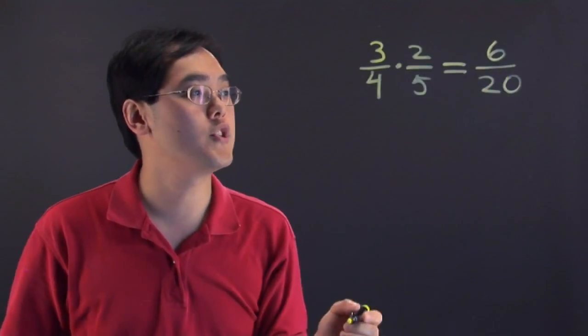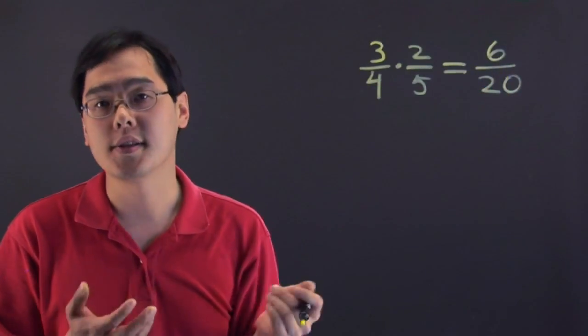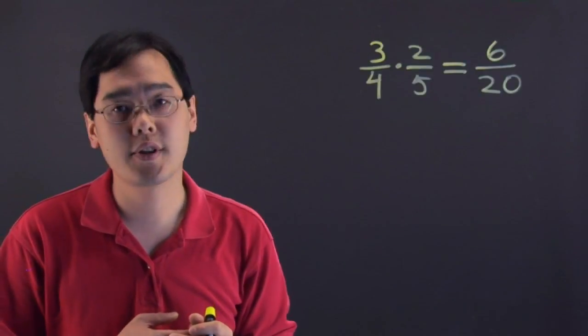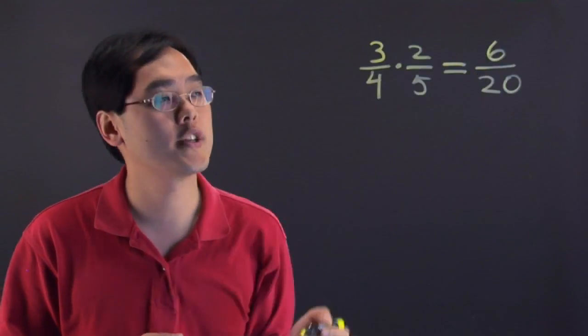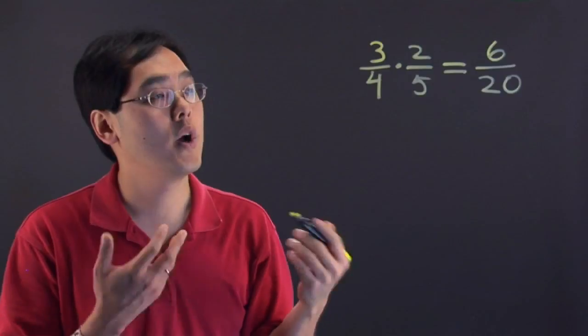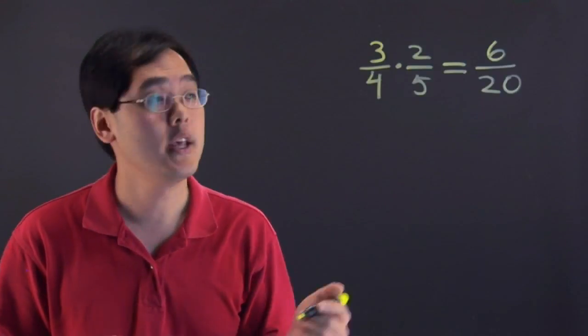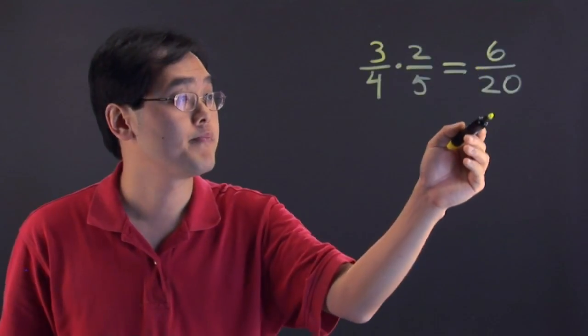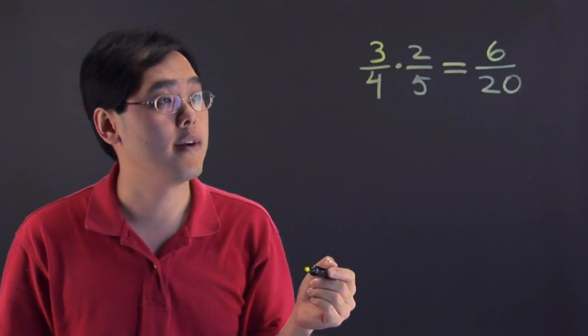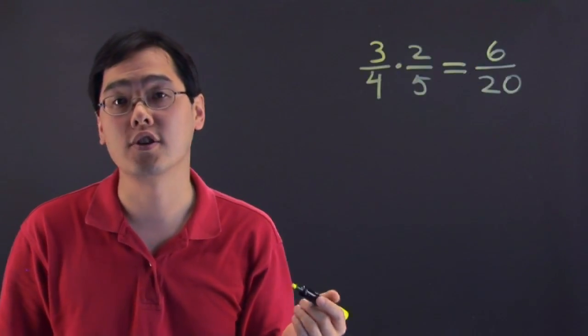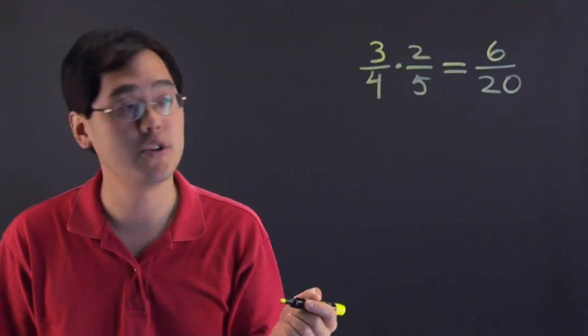Now where you go from here is you just got to ask yourself can this fraction be reduced? So what you want to think about is look at the 6 and look at the 20 and ask yourself well do 6 and 20 have any numbers that they have in common? In this particular case 6 and 20 both have a 2 as a factor so what you can do is reduce both numbers by the number 2.